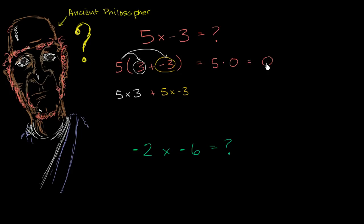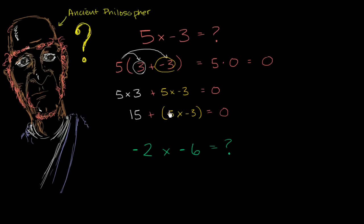This whole thing needs to be equal to 0. Now, 5 times 3 — those are two positive numbers — that is going to be 15. So we get 15 plus whatever 5 times negative 3 is, and that needs to equal 0 to be consistent with all of the other mathematics we know. What plus 15 equals 0? The opposite of 15. So 5 times negative 3 needs to equal negative 15. And that's also consistent with the intuition of adding negative 3 repeatedly five times.